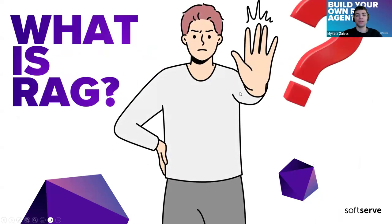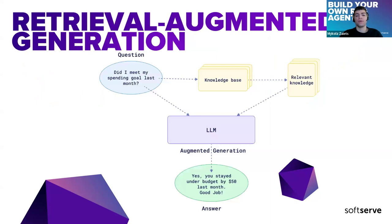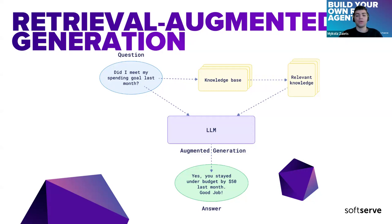What is RAG? RAG is Retrieval Augmented Generation. I have a diagram that represents how RAG works in a simple way. It starts from a user question, and to answer the question the system looks up relevant information from our knowledge base, which could be a collection of documents like PDF files, Excel files, or Word documents — any other data or stored facts.